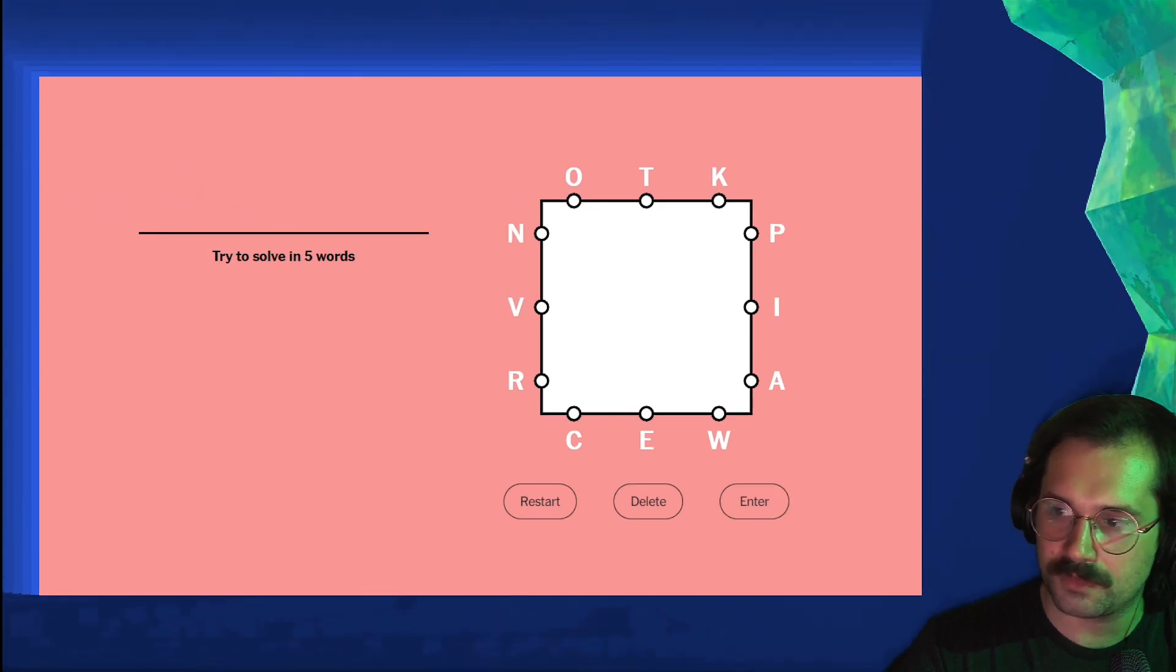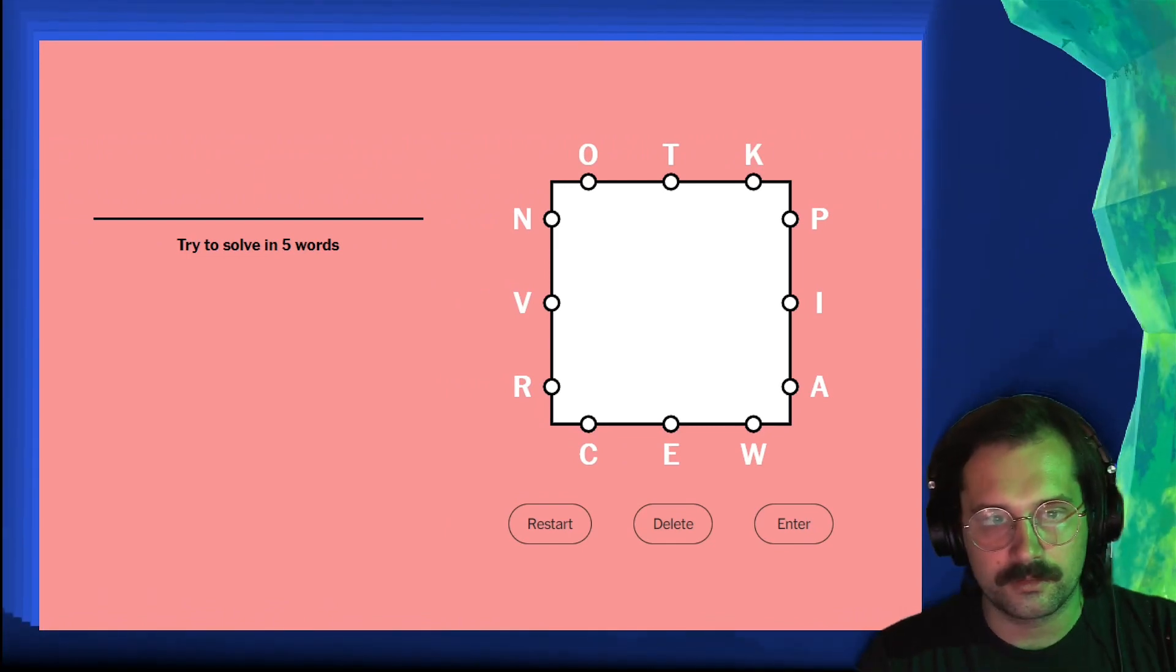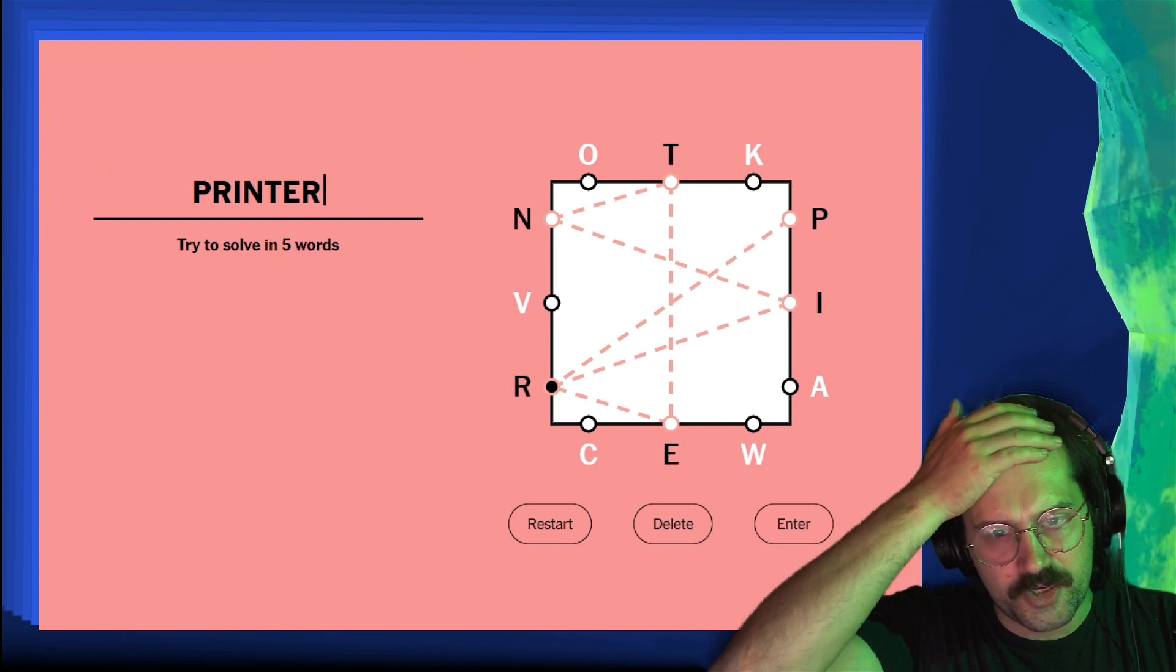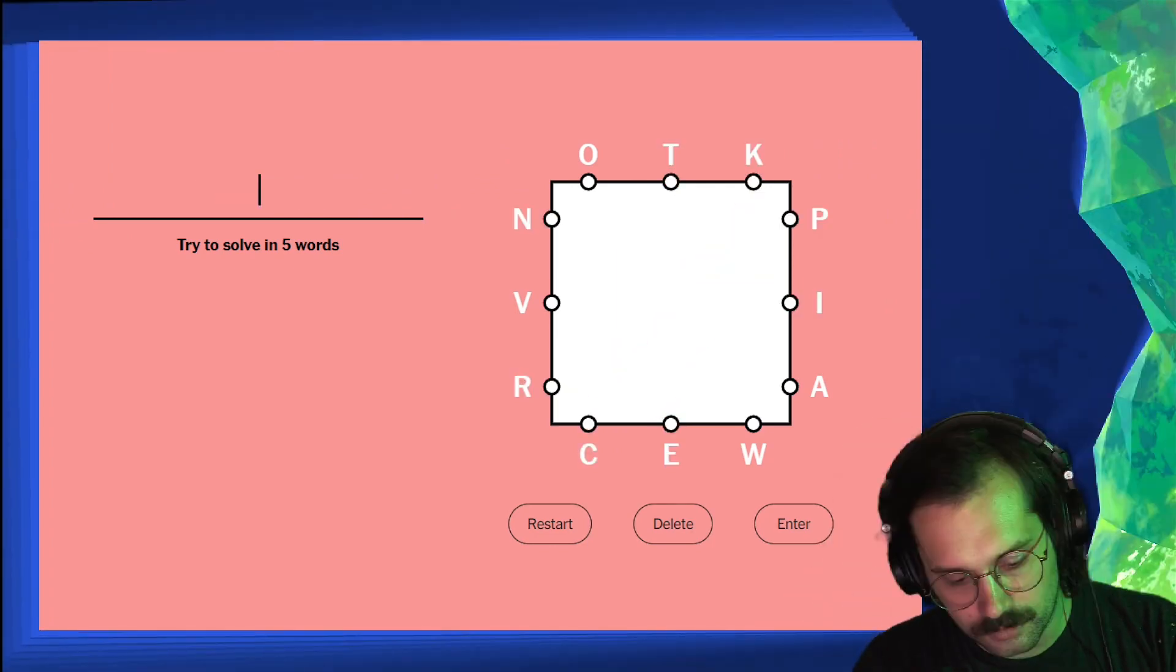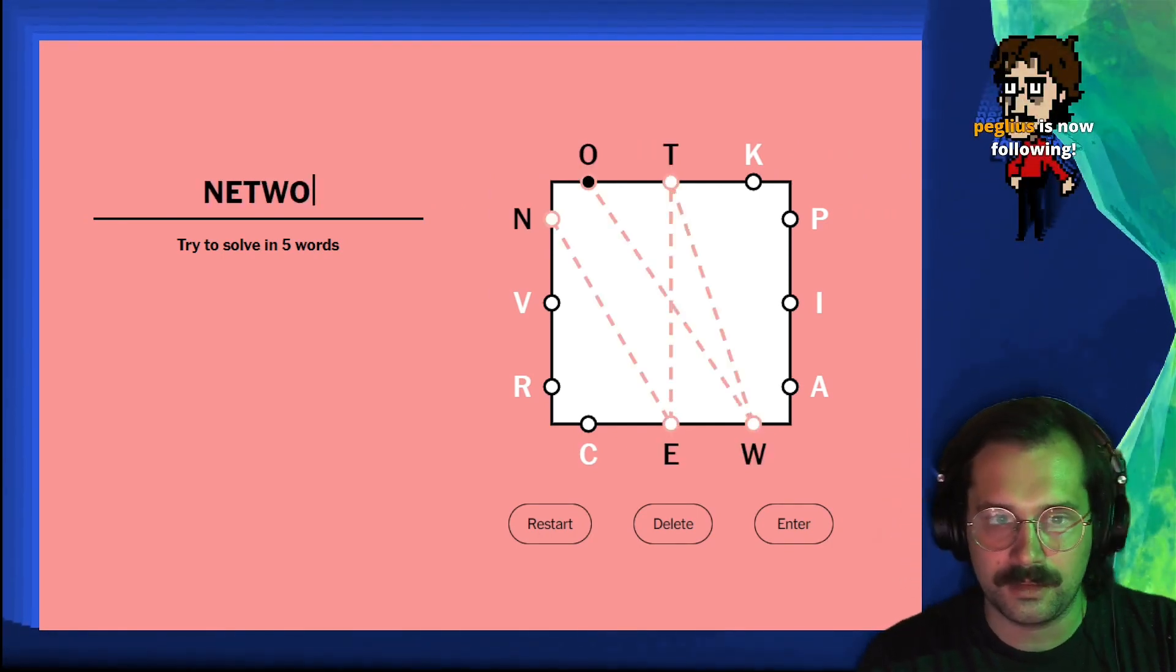Printer, that's a good word. We're leaving a lot of hard letters on the table here. We've got CK which is good. Network does get rid of the W and the T.